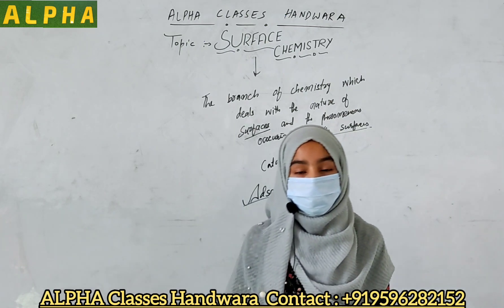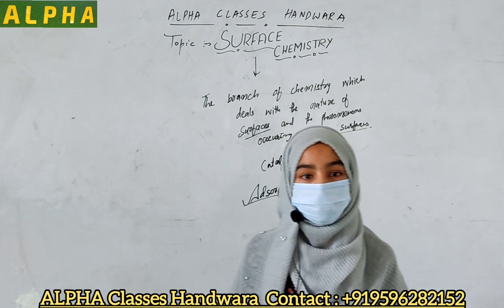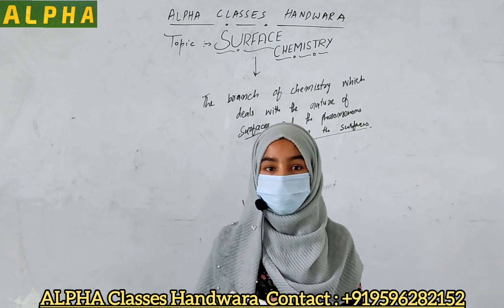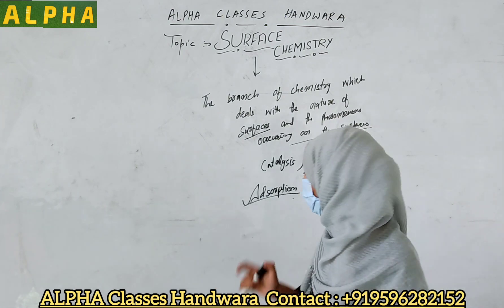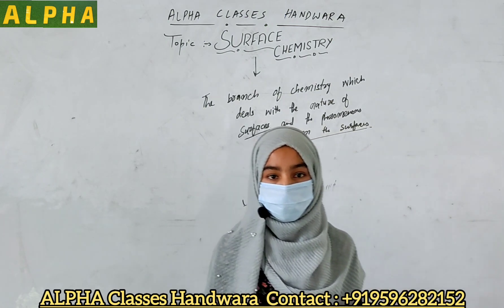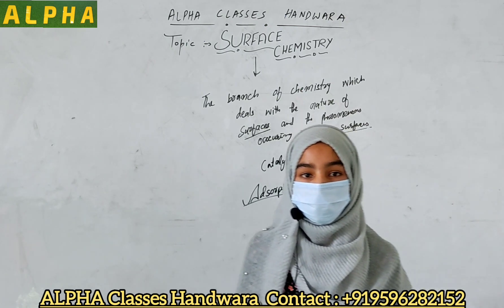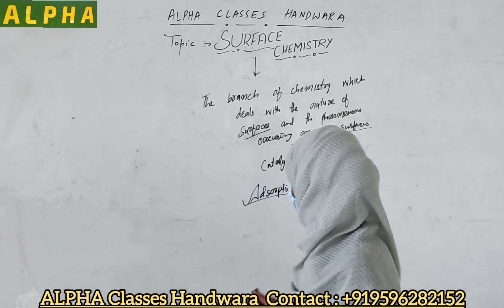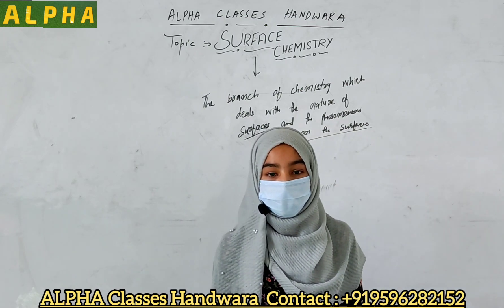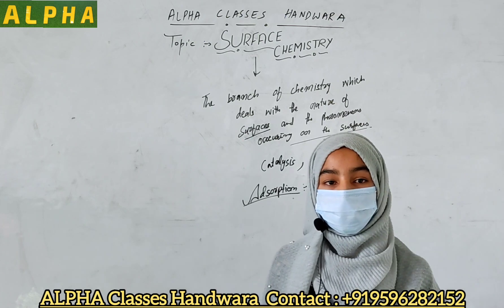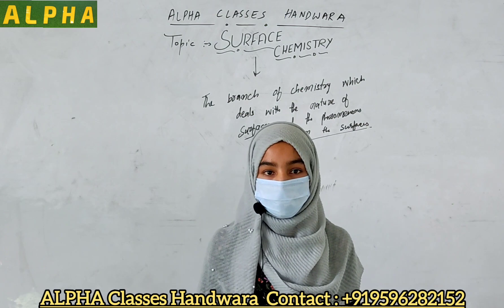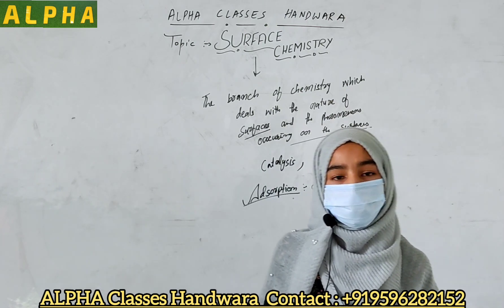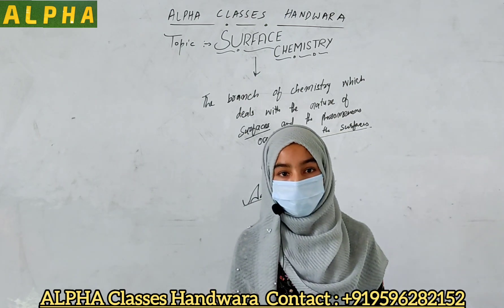Now, what is adsorption? Adsorption is actually the accumulation of molecular species on the surface of another substance — not in the bulk, but only on the surface. For example, if we wash our hands, the water will not penetrate into our tissues or bulk material, but will remain only on the surface of our hands. Another example: if we dip a chalk into water and then break it, the surface of the chalk will be wet but the inside will be dry, showing that water molecules accumulated only on the surface of the chalk, not in its bulk.